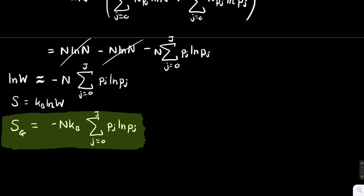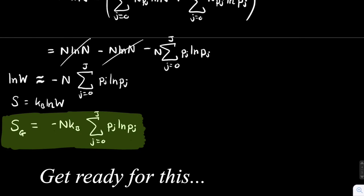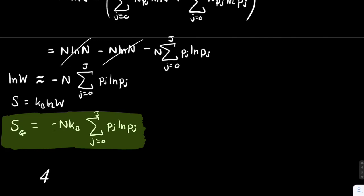You might be thinking it doesn't look that useful yet, and I'd probably agree. But in the next video I'm going to use this result to derive a very important probability distribution — possibly the cornerstone of statistical mechanics — called the Boltzmann distribution. You get it directly from maximizing this Gibbs entropy equation, finding the turning points. I'll be going through that in the next video.